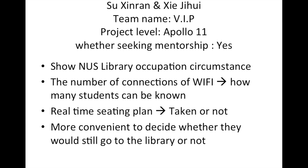Whether we can find a seat for ourselves — if a system can show real-time circumstances, it could be very helpful. For example, by showing the number of Wi-Fi connections, how many students can be estimated. Also, when students come into the library, they can be authorised to select the empty seats and tick them. Once they finish the selection, the seats on the app will be shown as taken.